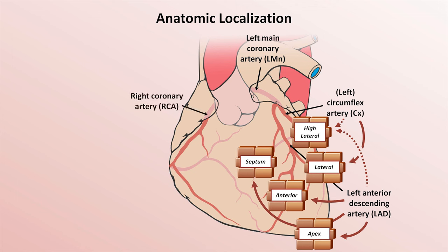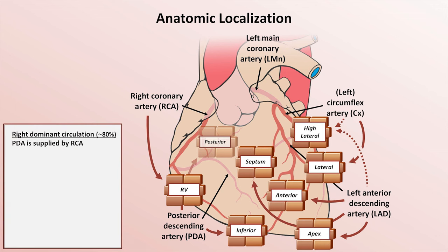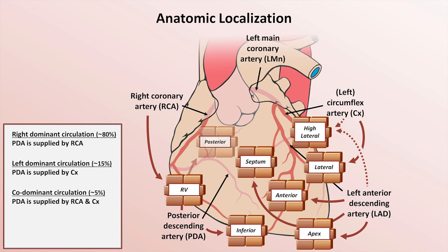On the other side of the heart, the right coronary artery supplies the right ventricle. The final major vascular territory is that of the posterior descending artery, which supplies the inferior and posterior walls. The major variation in coronary circulation is the origin of the posterior descending artery. In right dominant circulation, the PDA and thus the inferior and posterior walls are supplied by the right coronary artery — this occurs in roughly 80% of people. In left dominant circulation, seen in approximately 15% of people, the PDA comes off of the circumflex. In the last 5%, codominant circulation exists, in which the PDA is supplied by both the RCA and the circumflex.